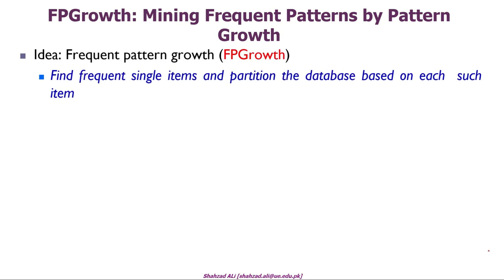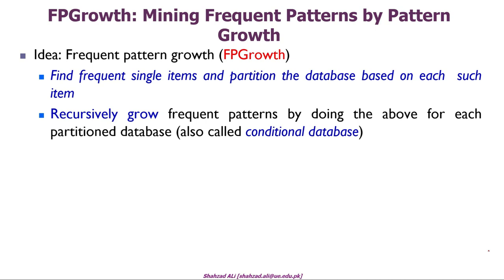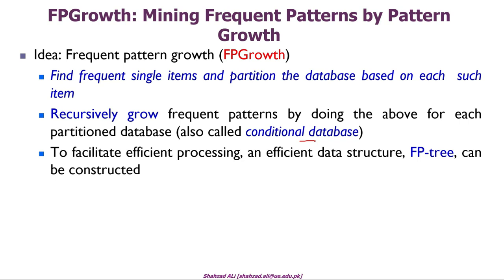Let's look at how this algorithm works. The general idea is: first we find the frequent single items or frequent item sets of length 1, then we partition the database based on each such item, and then we recursively or iteratively grow frequent patterns for each partitioned database, which is also known as a conditional database. To facilitate efficient processing we use a new data structure called FP-Tree.